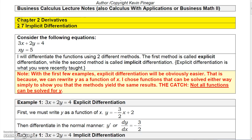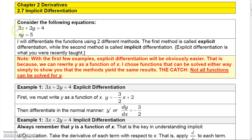Now we want to talk about something called implicit differentiation. All the differentiation we've been doing so far has been explicit differentiation. The way I'm going to introduce this section is I'm going to take two functions, 3x plus 2y equals 4 and xy equals 5, and I'm going to find the derivatives of these two functions both explicitly and implicitly, so that you can see the difference.